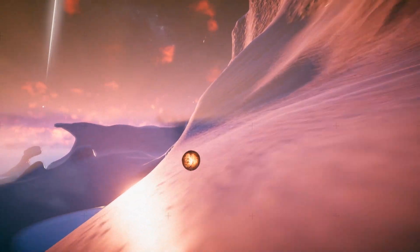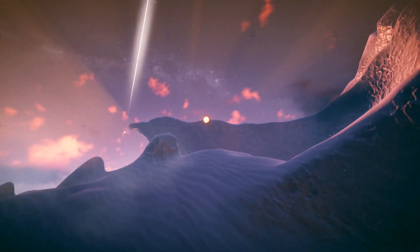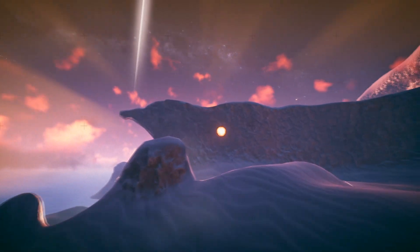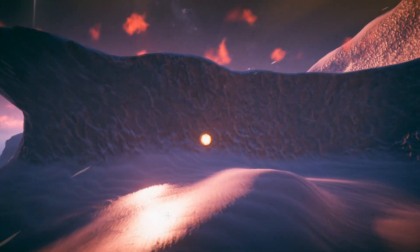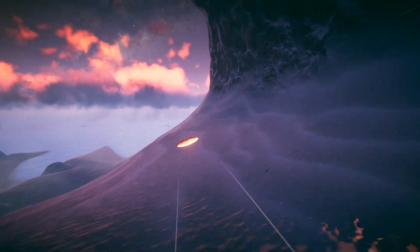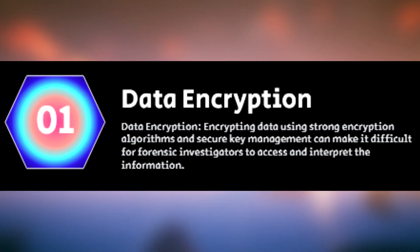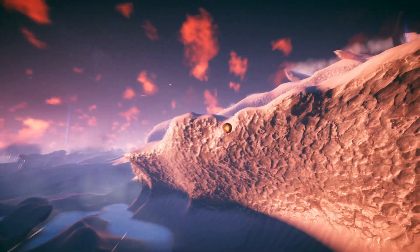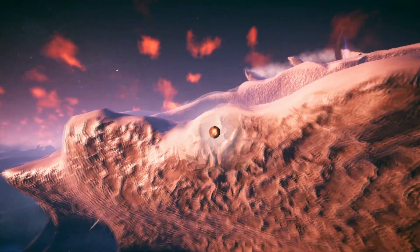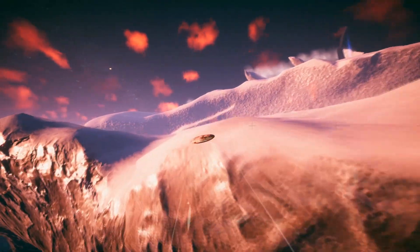As a disclaimer, don't use any of this for nefarious purposes. This video is entirely for educational purposes only. Anti-forensics can actually be used in different areas like computer systems, networks, or digital media. There are a couple of different types of anti-forensics to talk about. The first one is data encryption — using an algorithm to encrypt your data — which can make it difficult for forensic investigators to actually read the data.